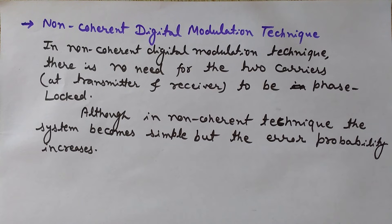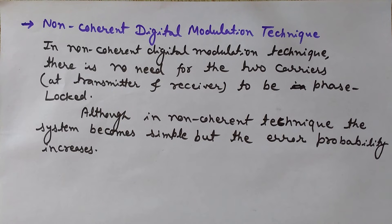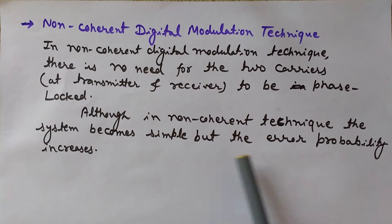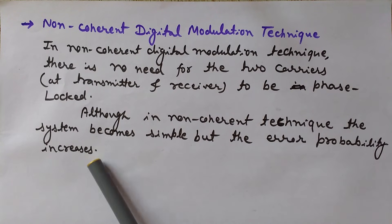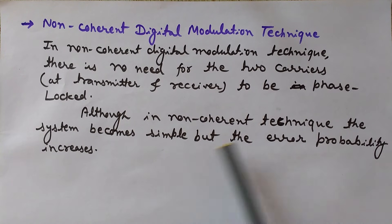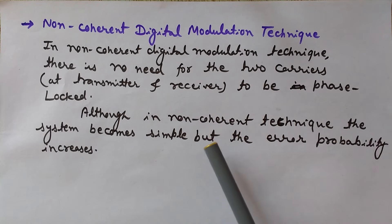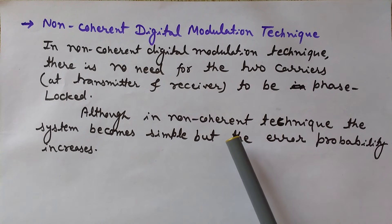One carrier is the local carrier at the receiving end, and the other at the transmitting end is modulated by the message signal. These two carriers need not be in synchronism — they need not be phase-locked. Although in the non-coherent technique the system becomes simple, the error probability increases, which is in contrast to coherent techniques.